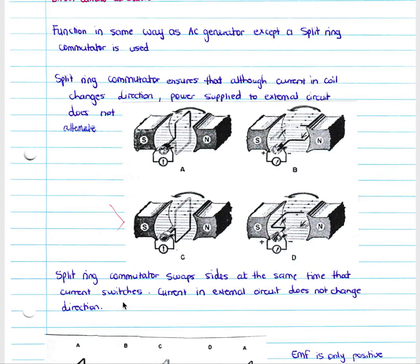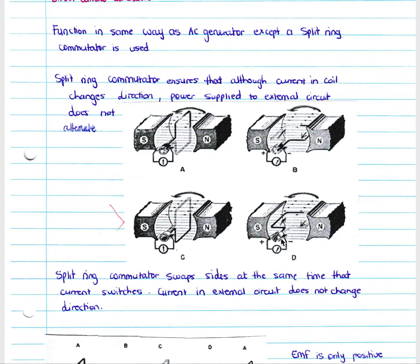The split-ring commutator simply swaps sides at the time the current switches, so your current in your external circuit does not change direction. We have a white or positive part of the split-ring commutator and a black negative part. In this coil position, we have flow away in the positive side. At 180 degrees later, the black part of the coil is now connected to the white side of the commutator and the white part of the coil to the black side.